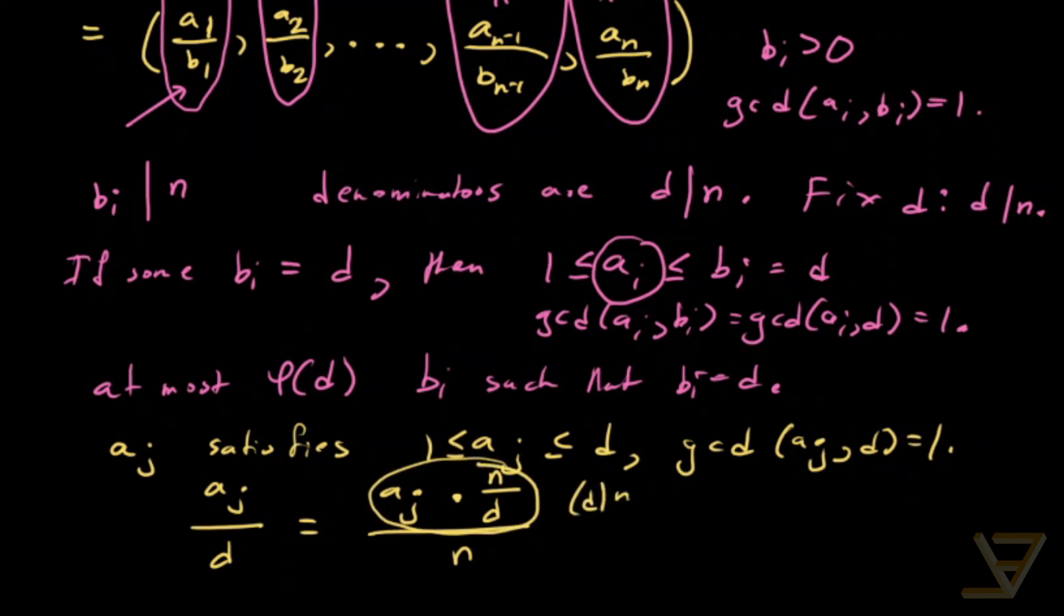So this is of the form of the original set and n over d is an integer since d divides n. Remember d divides n. So this is an element. This is an element of this tuple over here.